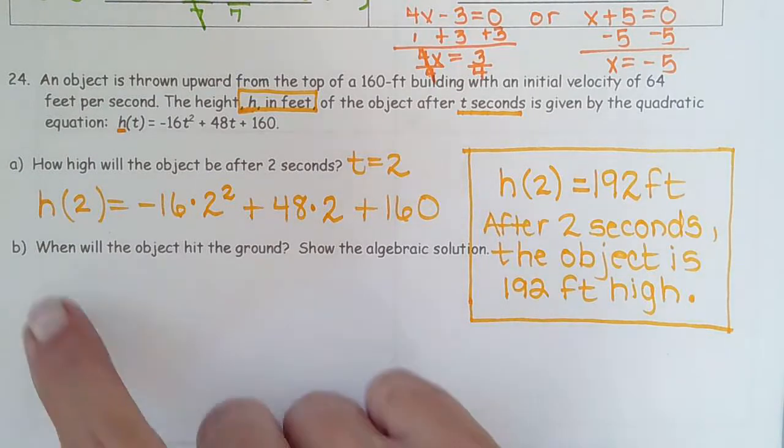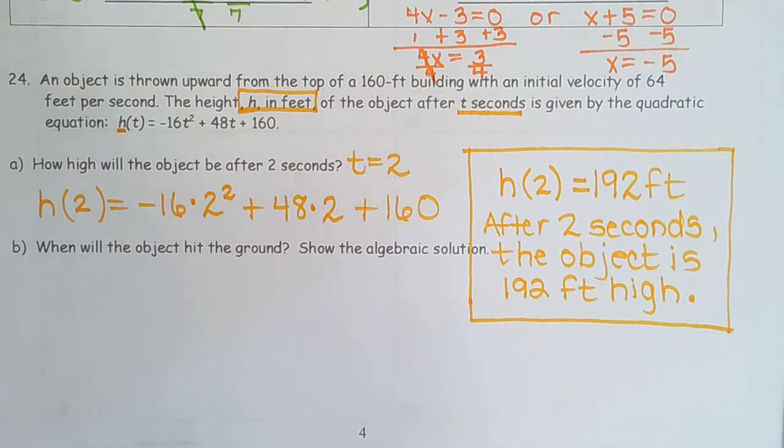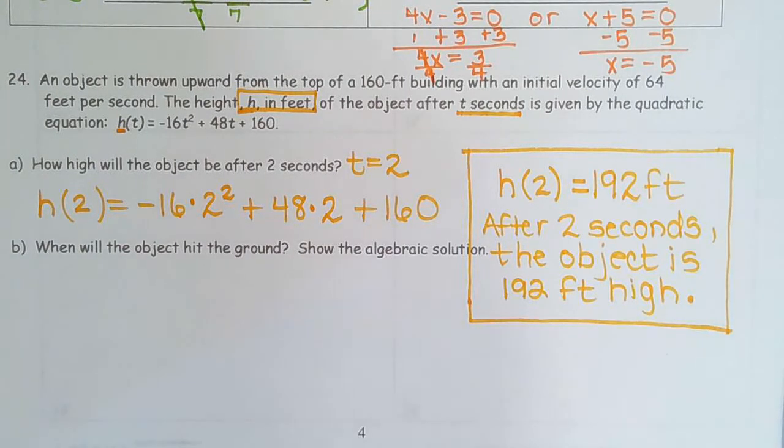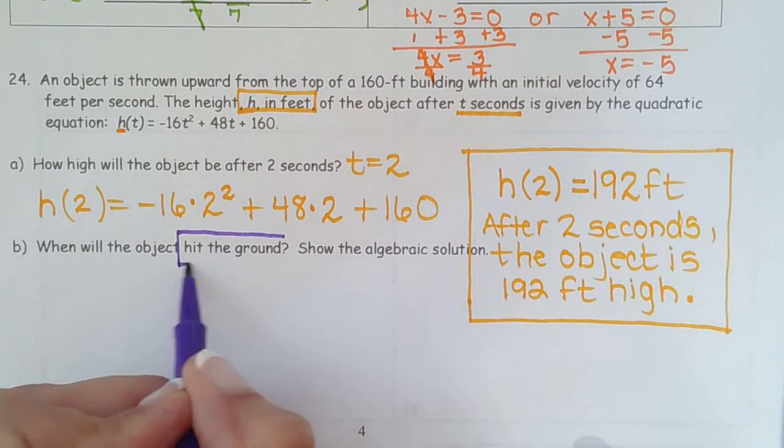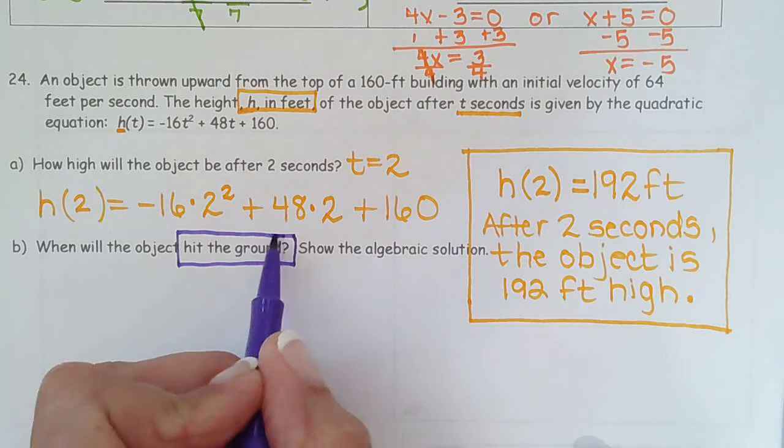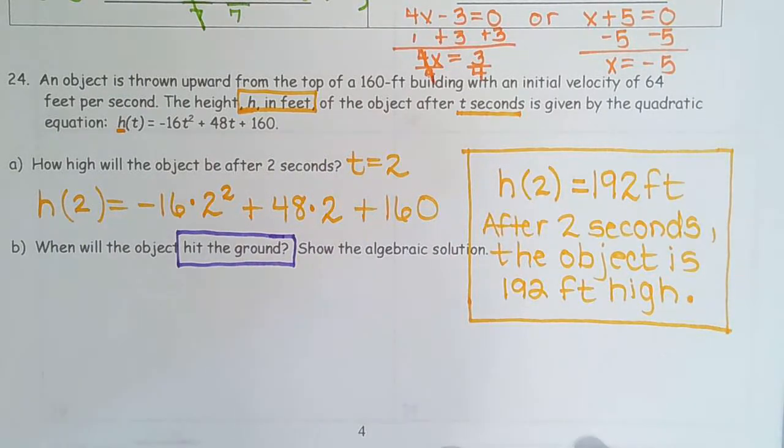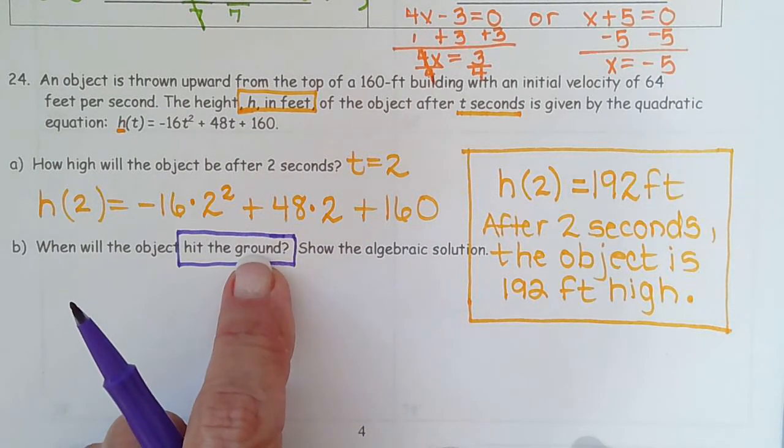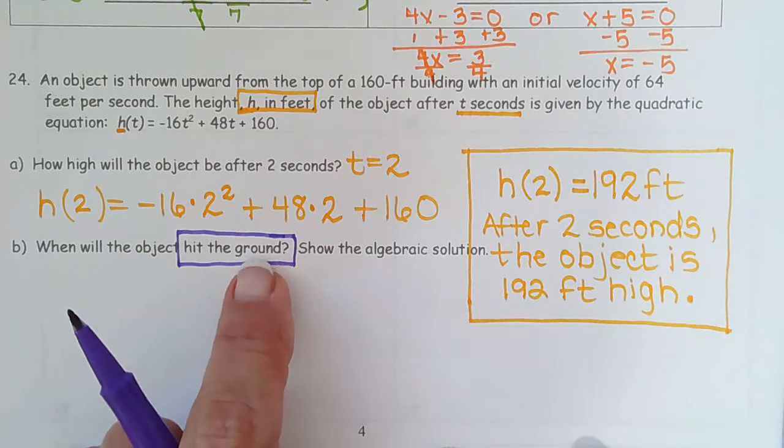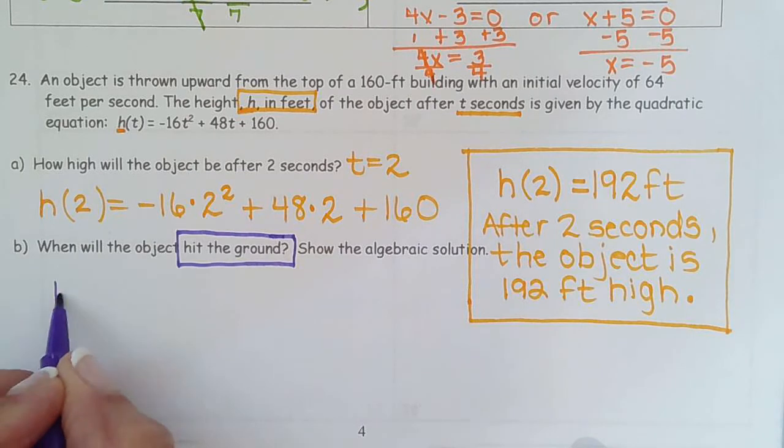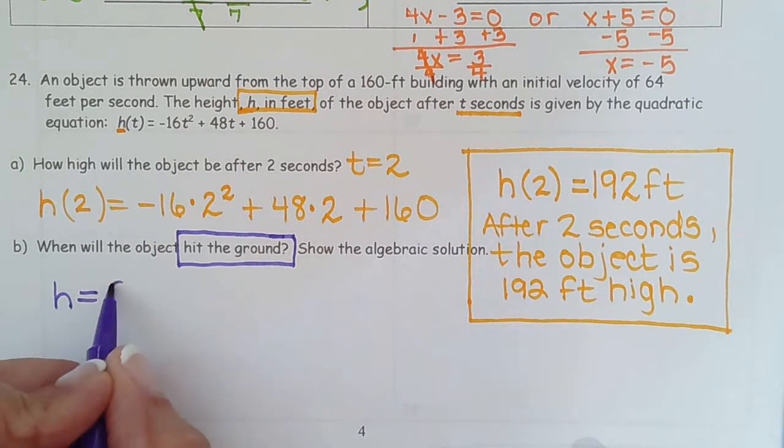Okay, the second part says when will the object hit the ground? Oh, hit the ground. So what does that mean? Hit the ground. This is such a common phrase you're going to see in math classes. So I need to know is that height or is that seconds? Ground is not seconds. It's height. So how high is the ball when it hits the ground? H equals zero.